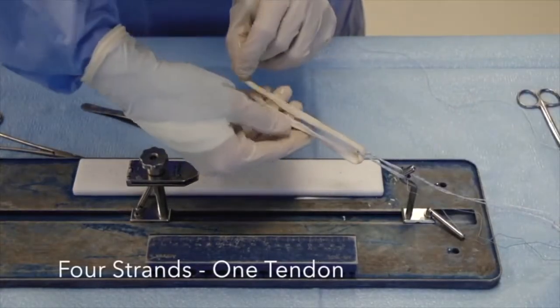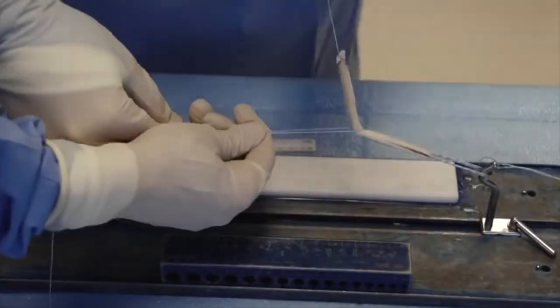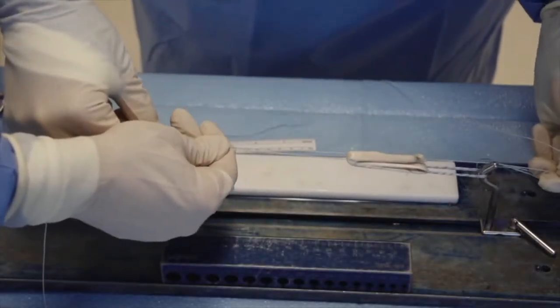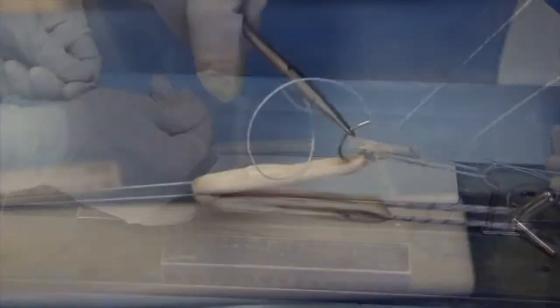We will demonstrate the four strand technique with one tendon. Once the two free ends of the graft are stitched together, a suture is passed in the middle and the tendons are folded.